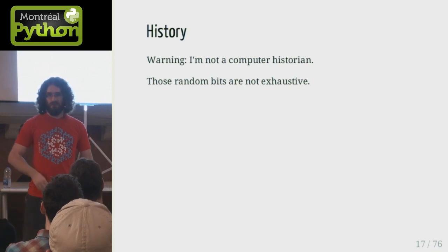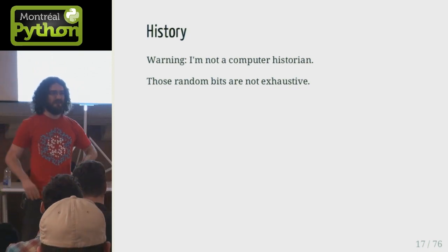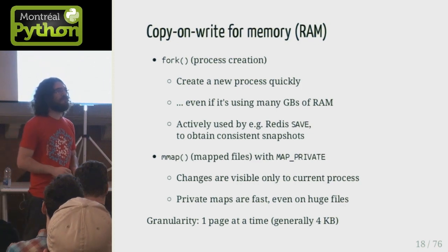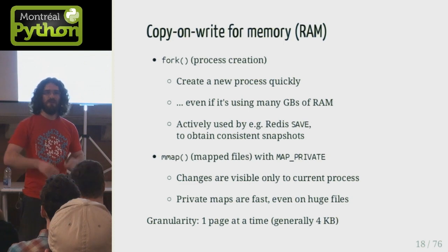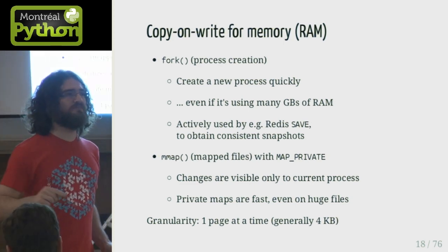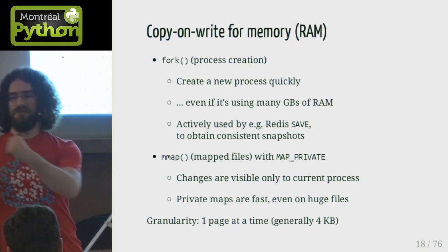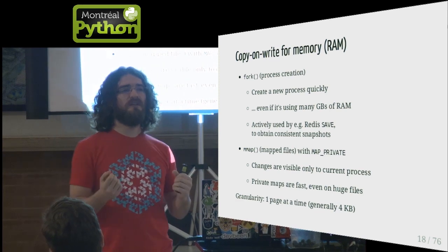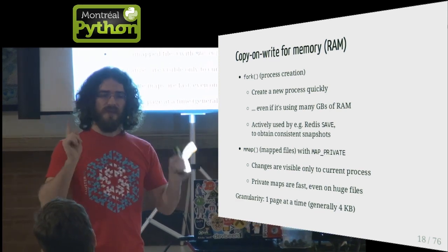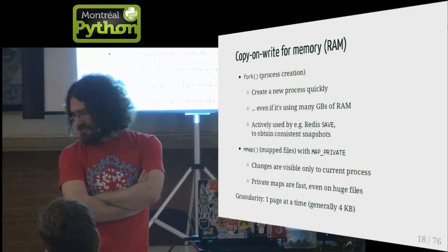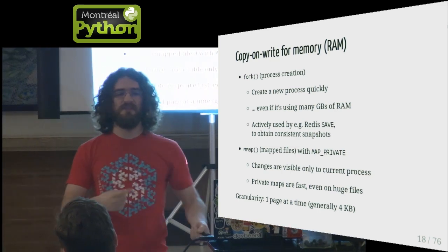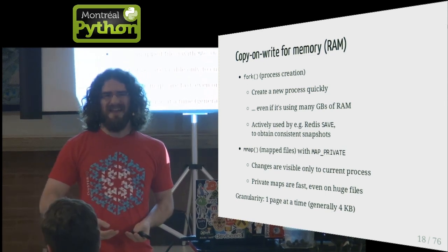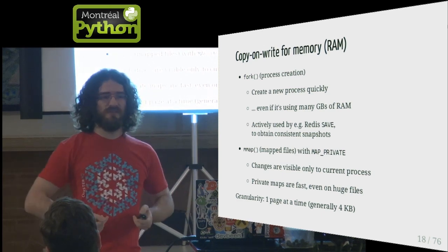A short intro to copy-on-write. If you know Unix systems, the only way to create a new process is to use fork. When you're in your shell and type `ls`, you're not exactly starting the ls process — your shell makes a copy of itself, and the copy uses exec to replace itself with ls. The parent process is still bash, watching the child process until it transforms into ls. We're not making a full copy of the bash process because that would be useless since we're going to replace it anyway. Instead we use copy-on-write.